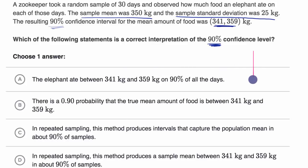Let's think about it this way. Let's say that this is the true population mean, the true mean amount of food that an elephant will eat in a day. What the zookeeper can try to do is take a sample, and in this case they took a sample of 30 days, and they calculated a sample statistic, in this case the sample mean, of 350 kilograms.